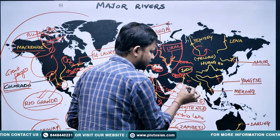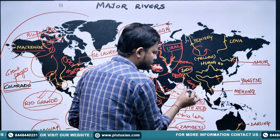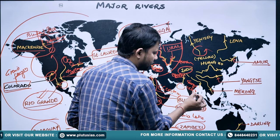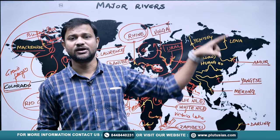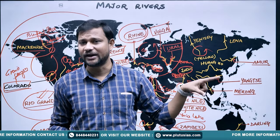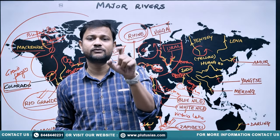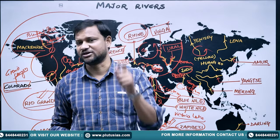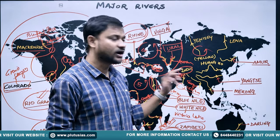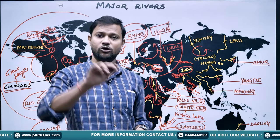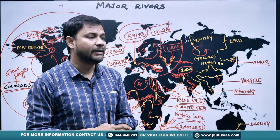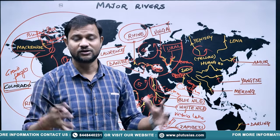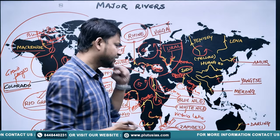Next is the Ganga River, with a length of 2,525 kilometers. There is already a separate video on the Indus, Ganga, and Brahmaputra rivers in the playlist. The Ganga merges with the Brahmaputra and drains into the Bay of Bengal, forming the largest delta in the world — the Sundarbans.